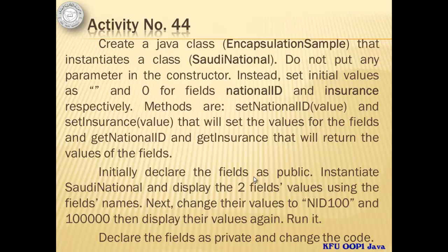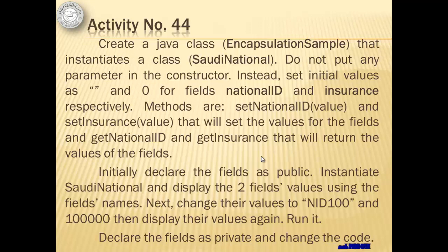For activity number 44, we will create a Java class or project called EncapsulationSample that instantiates a class SaudiNational. We will not put any parameter in the constructor. Instead, we will set initial values as nothing and zero for fields nationalID and insurance respectively. The methods are setNationalID and setInsurance to set the field values, and getNationalID and getInsurance to return them. We will initially declare the fields as public, then instantiate SaudiNational and display the two field values using the field names. Then we will change their values to NID100 and 100,000 and display them again. That will be the first run. Later, we will declare the fields as private and change the code — that will be the second run.